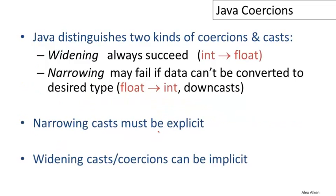Now Java in particular distinguishes two kinds of coercions and casts. You have widening coercions and these will always succeed. So that means Java will always put them in and there'll never be any complaining from the compiler or the runtime system about them. The conversion from int to float is an example of a widening cast.